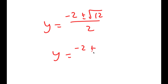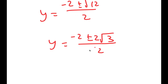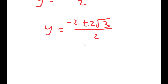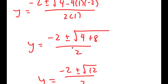And the square root of 12 can be simplified into 2 root 3. So I have negative 2 plus or minus 2 root 3, all over 2. And then now if we divide by 2, I get negative 1 plus or minus the square root of 3. So these are my two values of y.